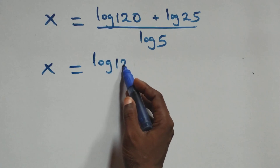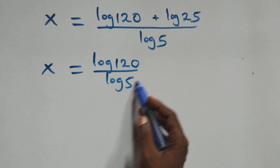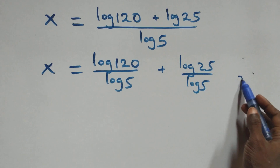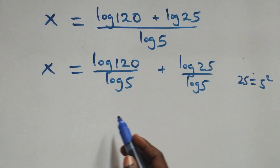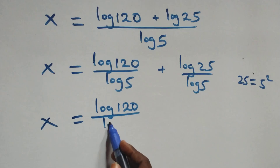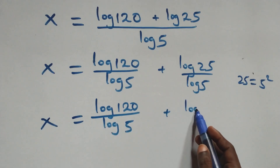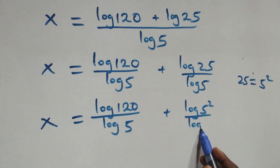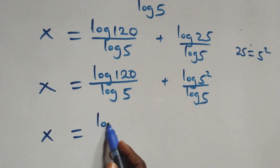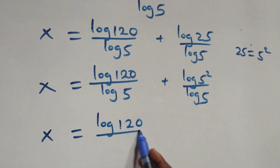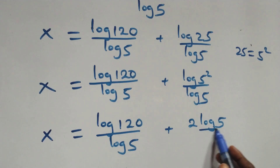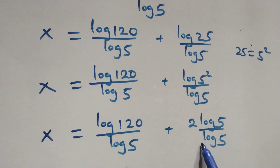We have x equals to log 120 over log 5, plus log 25 over log 5. Here also 25 is the same thing as 5 times 5, which is 5 squared. So we have x equals to log 120 over log 5 plus log of 5 squared over log 5. Then here we apply the power rule of logarithm — the 2 comes out front — giving us x equals to log 120 over log 5 plus 2 times log 5 over log 5.